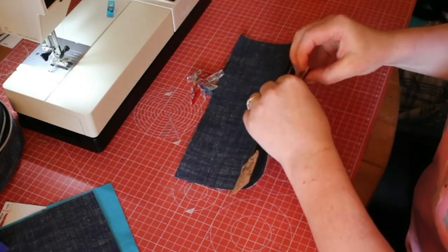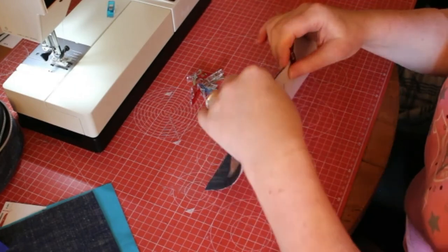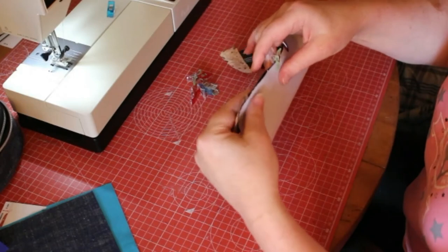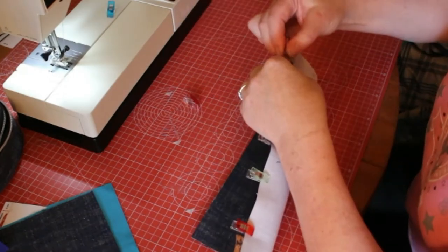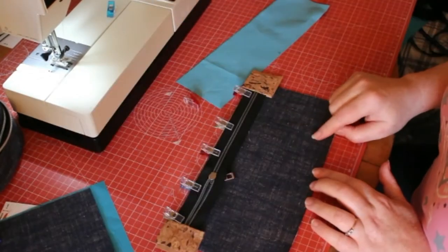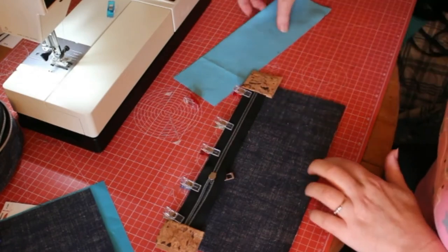When fitting the zip, I face the right side of the zip and the right side of the fabric together and then clip in place. I don't use double-sided tape because I don't like it for my domestic machine. I use a Pfaff Tipmatic.